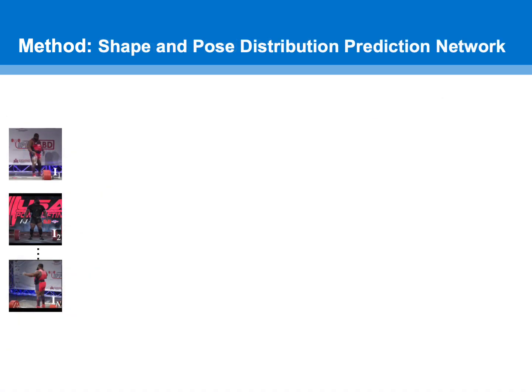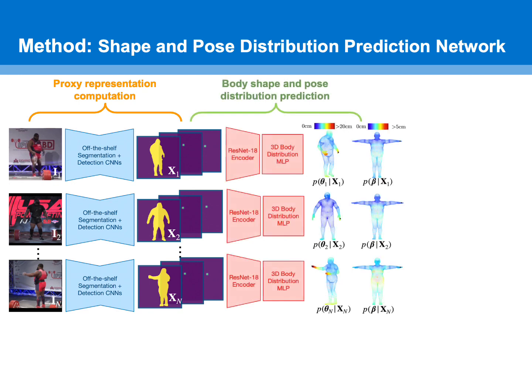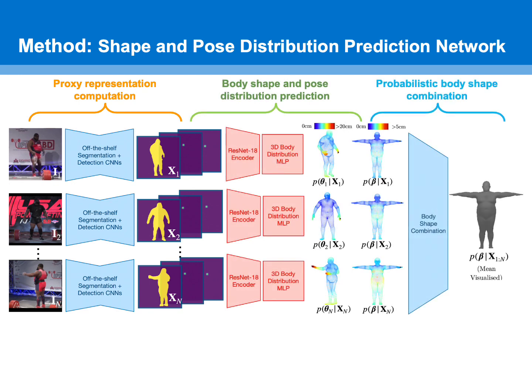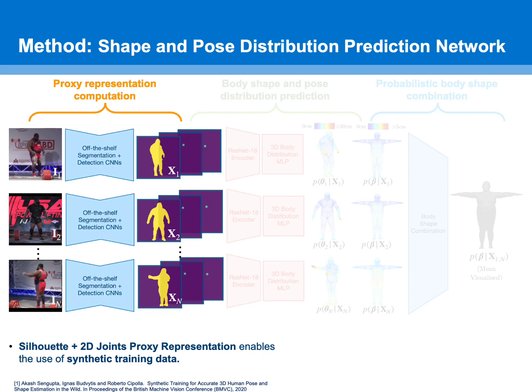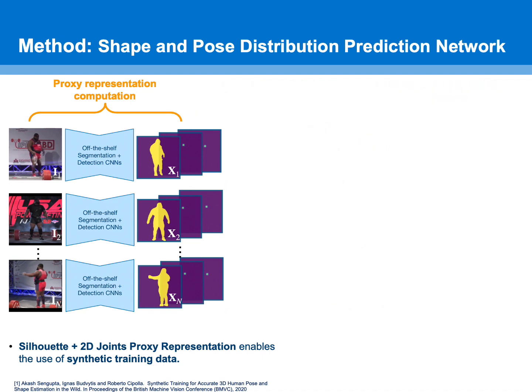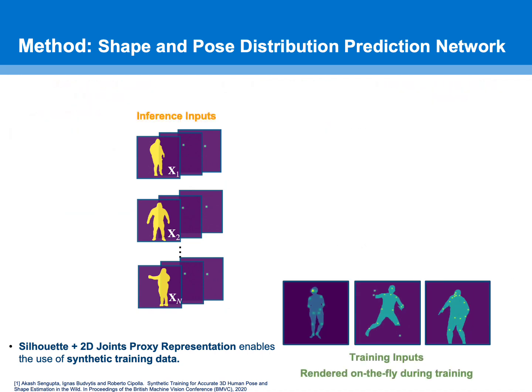Given a group of n input images for a subject, our method predicts body shape and pose in three stages. First, off-the-shelf networks are used to predict silhouette and joint heatmap representations from the input images during inference. This allows us to train our networks using synthetic silhouettes and heatmaps with varied and random body shapes, thereby overcoming the limited body shape diversity in current training datasets, while also resulting in a sufficiently small synthetic-to-real domain gap.